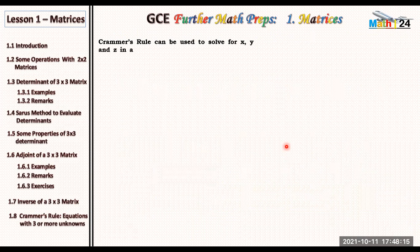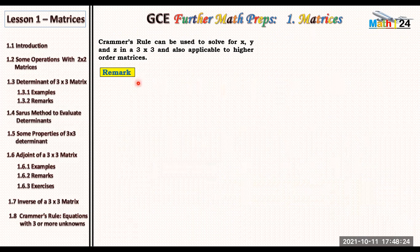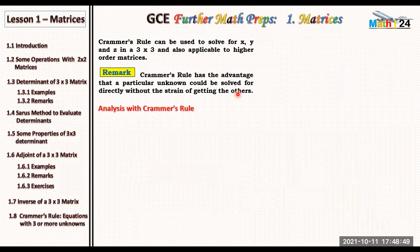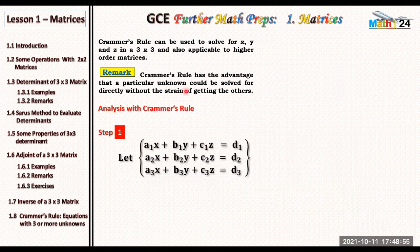Cramer's Rule can be used to solve for x, y, and z in a three by three and is also applicable to higher order matrices. Note that Cramer's Rule has the advantage that a particular unknown could be solved for directly without the strain of getting the others. So you can use Cramer's Rule and solve for x directly, or solve for y directly, or for z directly.